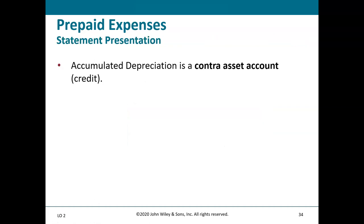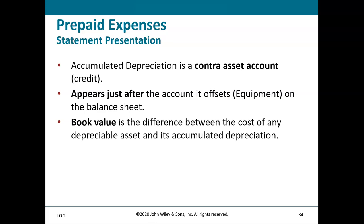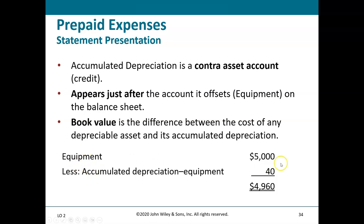On the balance sheet, Accumulated Depreciation appears just after the Equipment account it offsets. Book value is the difference between the cost of the depreciable asset and its accumulated depreciation. In our example, equipment cost is $5,000 and accumulated depreciation is $40, so the book value is $4,960 — the net value between the Equipment and Accumulated Depreciation accounts.